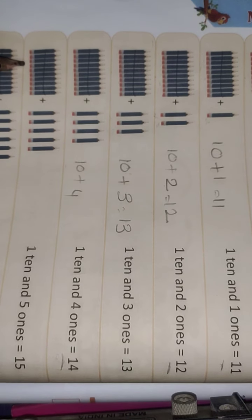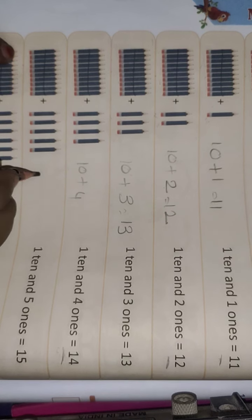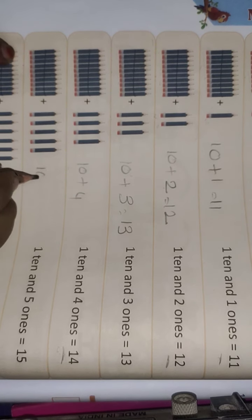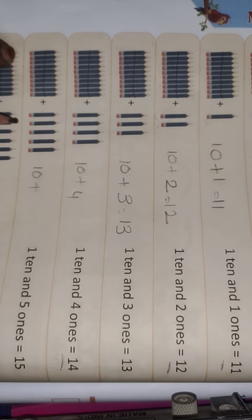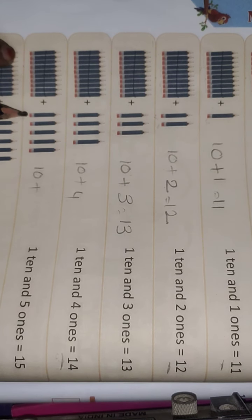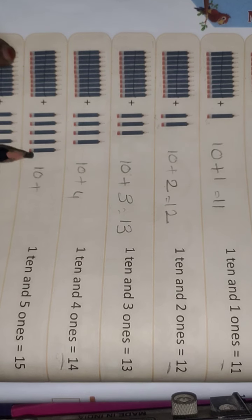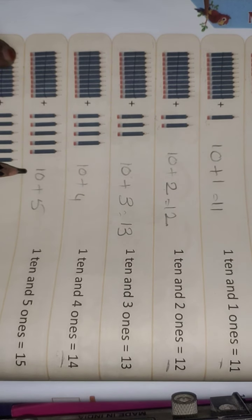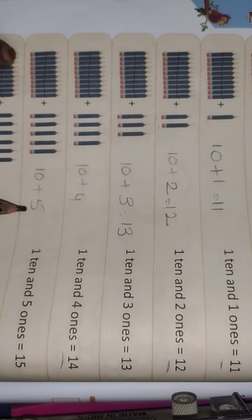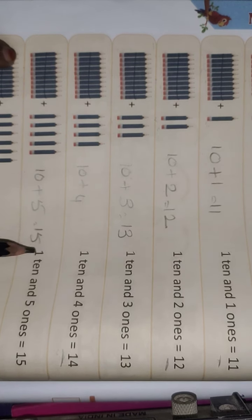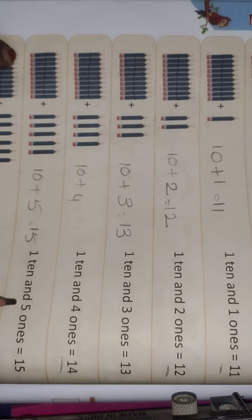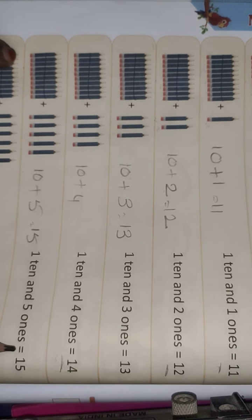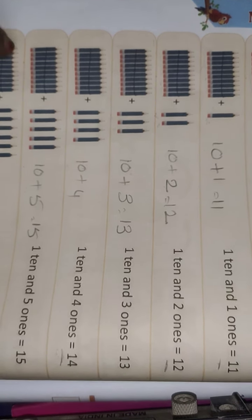Next — here also 10 pencils. Plus how many spare pencils? 1, 2, 3, 4, 5. 10 plus 5 — 1 ten and 5 ones equals 15.